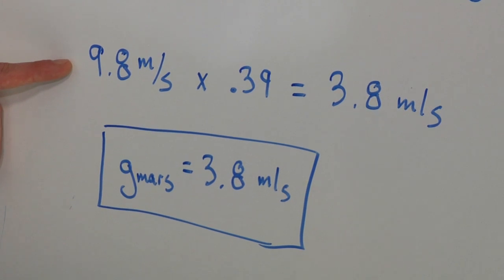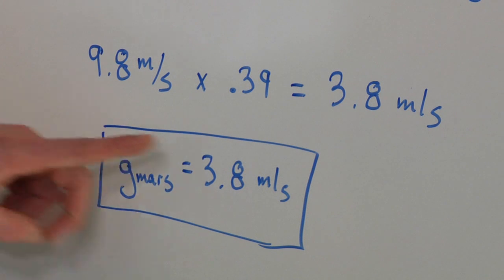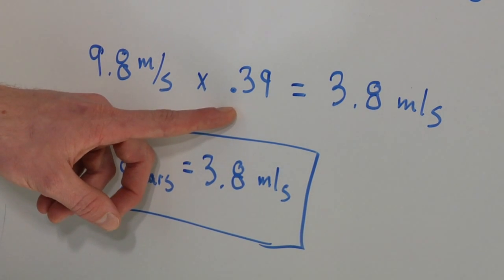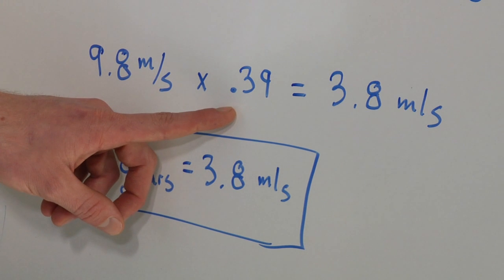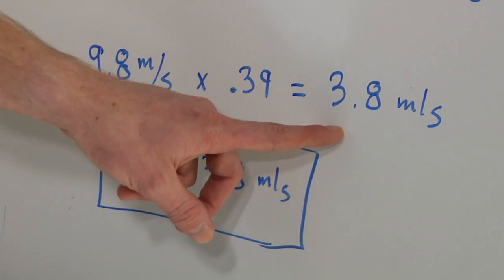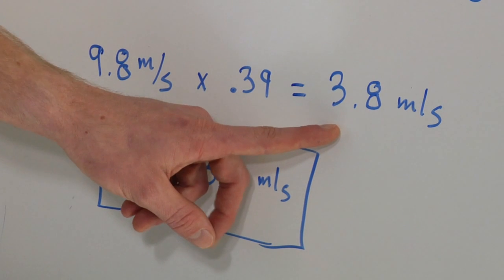But we still don't have an exact number yet. What we need to do is find what Earth's gravity is and then multiply by what we just found to get Mars' surface gravity. Earth has a surface gravity of 9.8 meters per second squared. We already found that Mars has a surface gravity that's 0.39 of Earth's. So if we multiply those, we find out that Mars' surface gravity is 3.8 meters per second squared. So that's our answer — Mars' surface gravity is 3.8 meters per second squared.